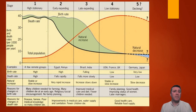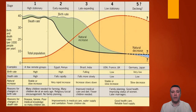By stage four, populations in this category have access to family planning and contraception. Women have relatively higher statuses than in previous stages, and they wait longer before having their first child. This results in a population that is either fairly stable in size or may be increasing ever so slightly.